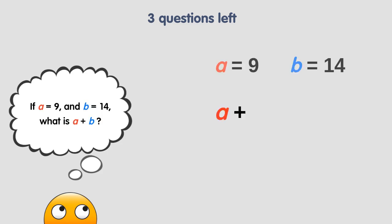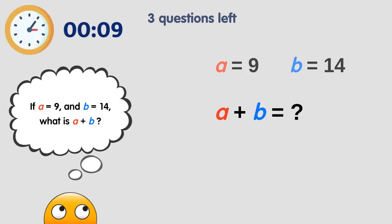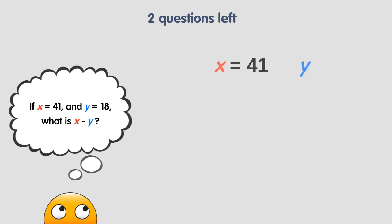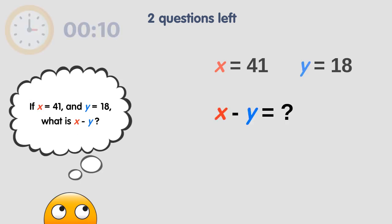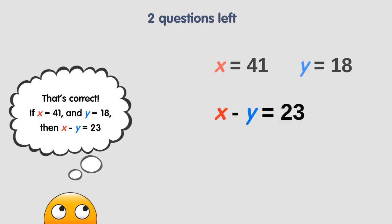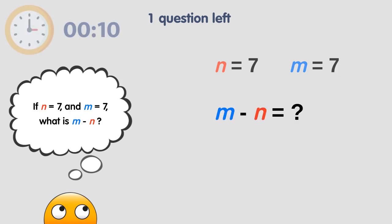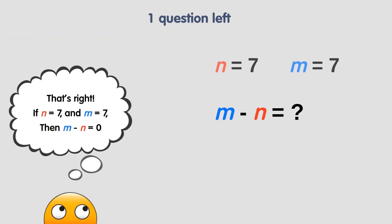If a is equal to 9 and b is equal to 14, how much is a plus b? The answer is 23. If x is equal to 41 and y is equal to 18, how much is x minus y? The answer is 23. If n is equal to 7 and m is equal to 7, how much is m minus n? The answer is 23.